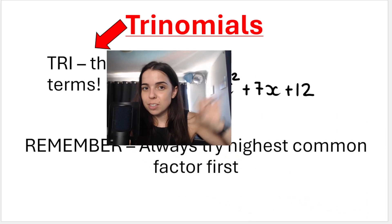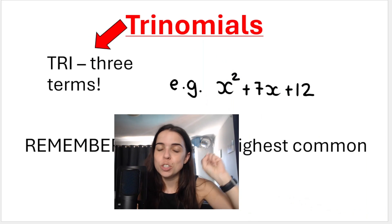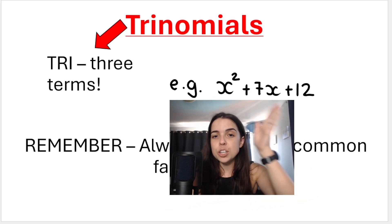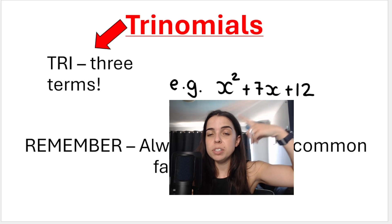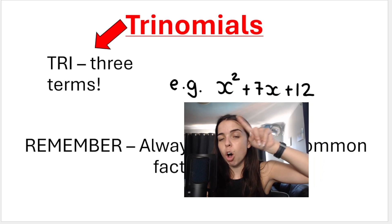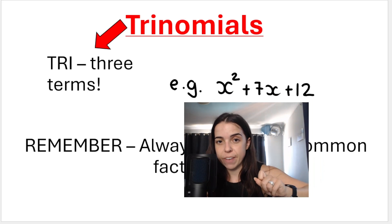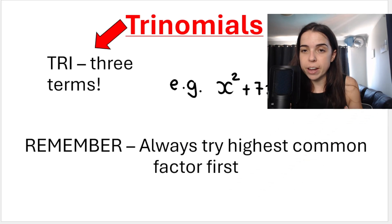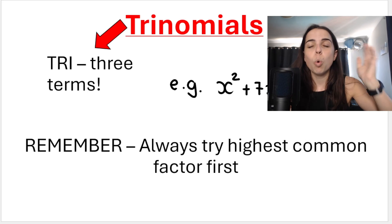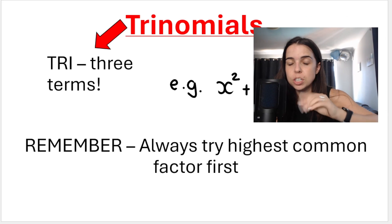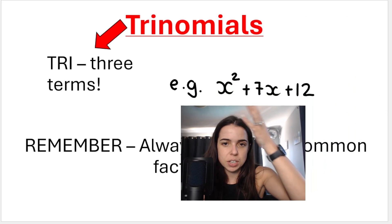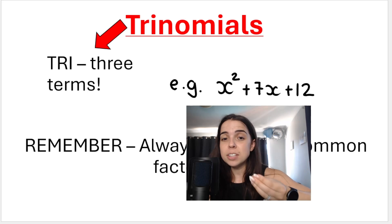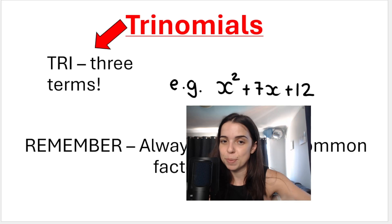First thing about trinomials: tri means three. So when we do trinomials, when you're asked to factorize an algebraic expression and you see something with three terms, trinomials needs to pop into your head. Remember, a very important rule about factorizing is always try highest common factor first. But in this case, you can see I can't take out a highest common factor. There's three terms — it's none of the other types we've learned so far, like difference of two squares. It must be trinomials.